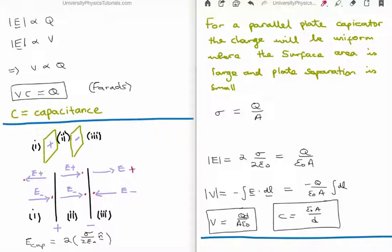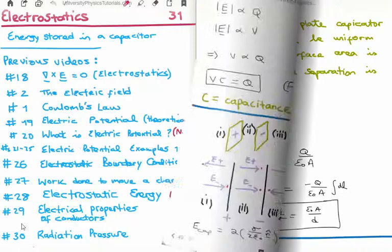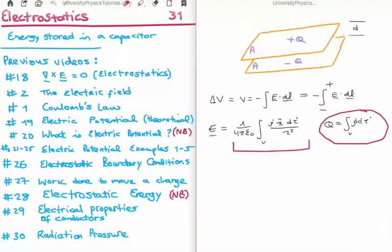What this means is that our potential, we know of course, is minus E dot dl. And that's going to be Q over epsilon 0 A, the integral of dl. But what we're integrating here, when we're talking about dl, is just the capacitor, the distance between capacitor plates, which of course is just going to give us the separation d.